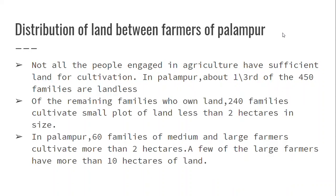Now, one-third of the 450 total families in Palampur are landless. 240 of the families have small plots of land and are called small farmers. 60 families have medium and large plots, and the rest are large farmers.